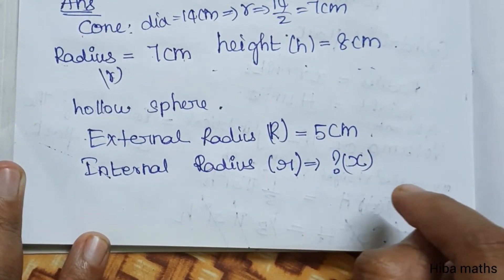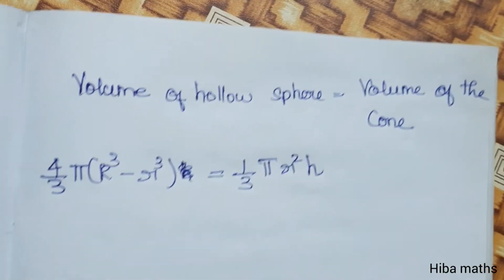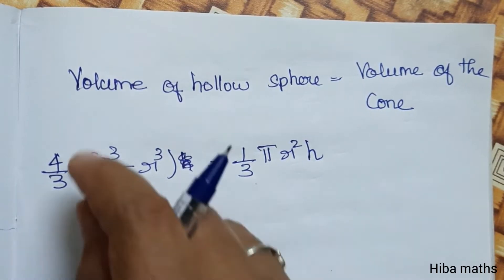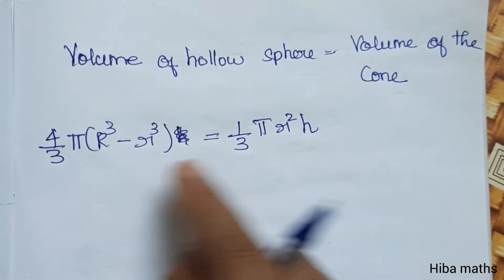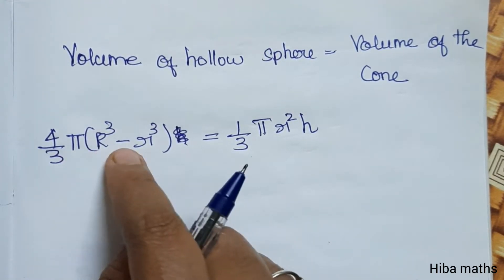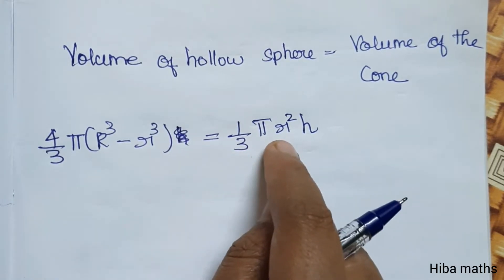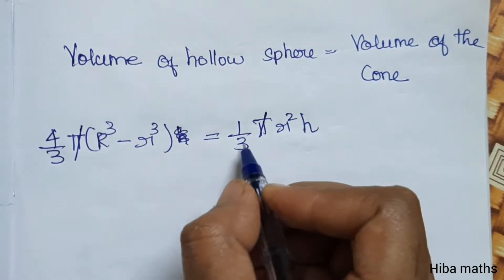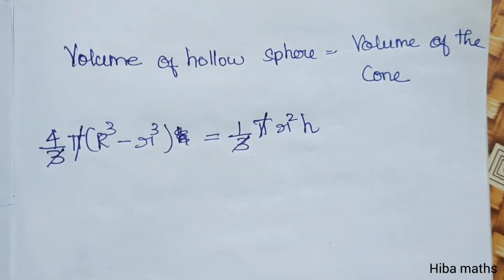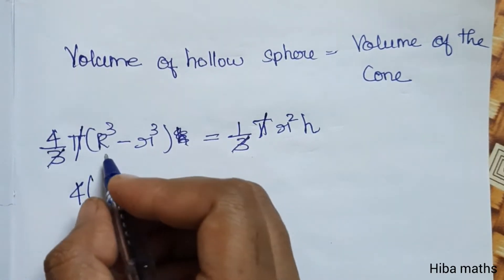Now we compare the two volumes. Volume of hollow sphere equals volume of the cone. The hollow sphere formula is 4 by 3 pi (R³ minus r³), and this equals 1 by 3 pi r² h. Pi cancels, and the denominator 3 cancels, leaving 4 on the left side.